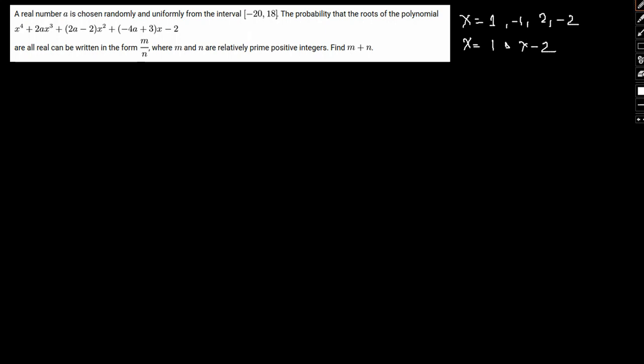So if we use the same then we can write the polynomial in this form as x minus 1 times x plus 2 times x squared plus 2 times a minus 1 times x plus 1. Now since we know that 1 and minus 2 are real numbers we need to focus on the quadratic part only.